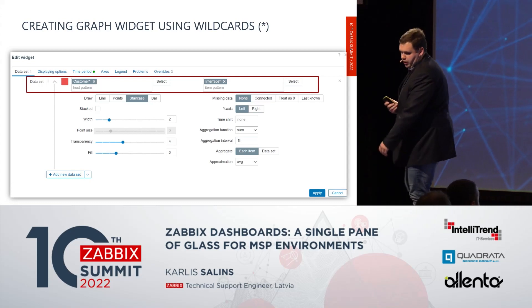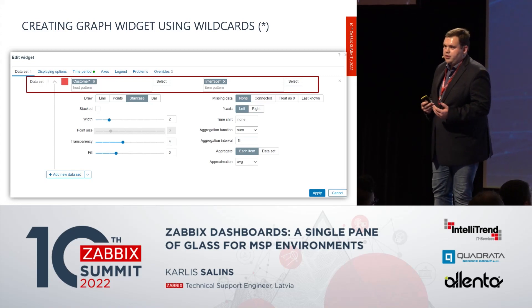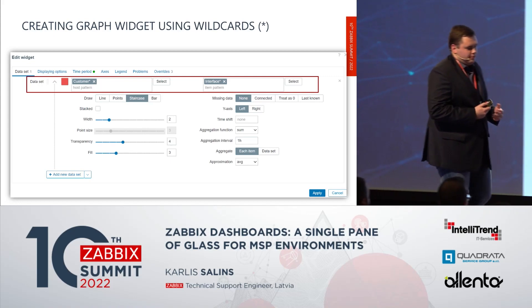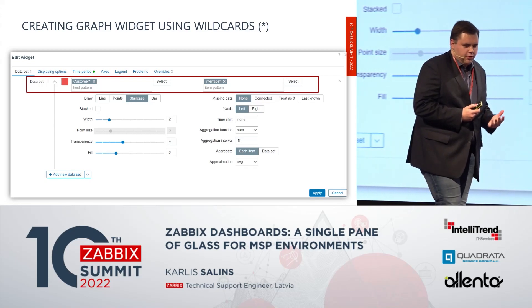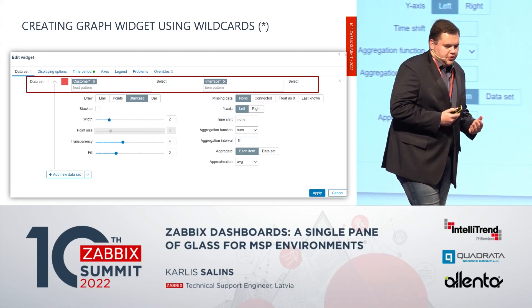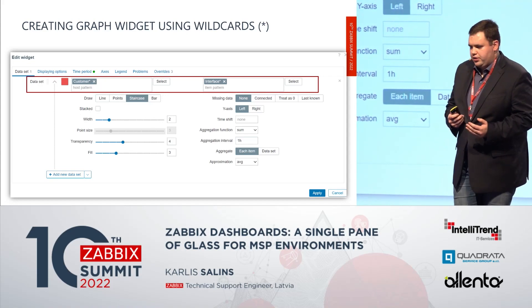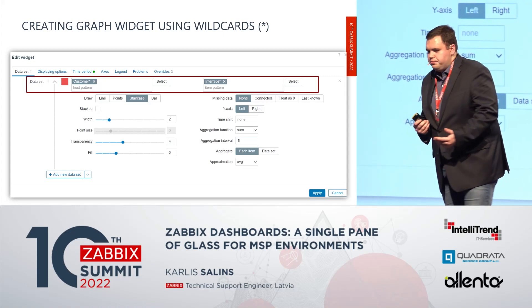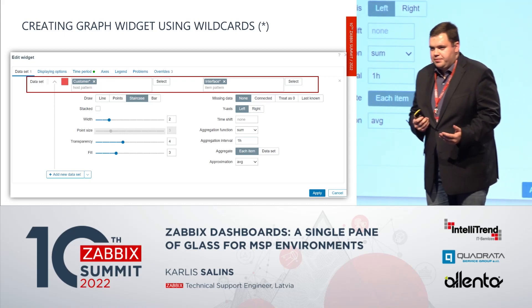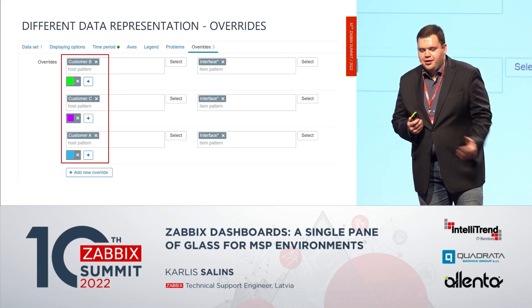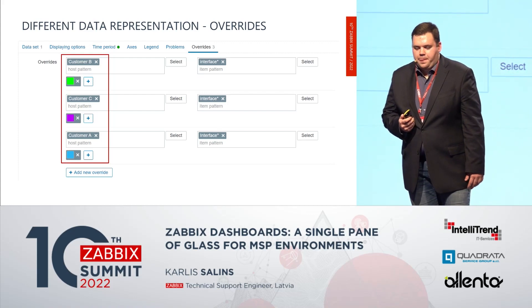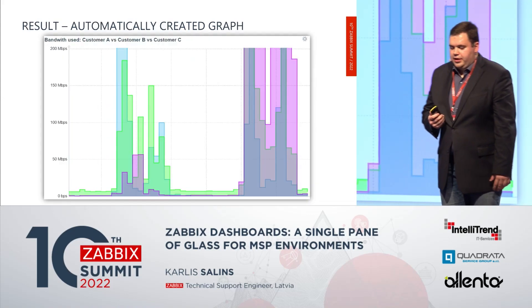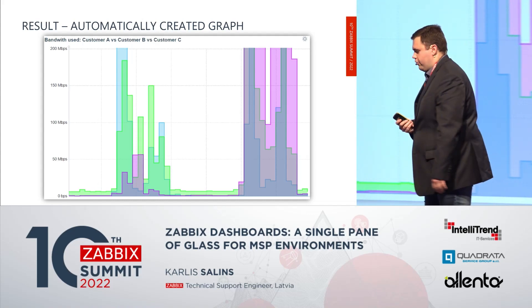How to set it up? If we know that all customer host names will start with 'customer', there is a very good way to handle it using wildcards, so each and every customer host we have will automatically be added to this graph. Same goes for the item — in this case bandwidth — using a wildcard. However, if you've used Zabbix before, you know that each customer will have the same colored graphs. To avoid this, we use overrides. The graph widget has a lot of options, and here I show that customer A, B, and C will have different colors, so the colors are shown automatically according to the overrides set.